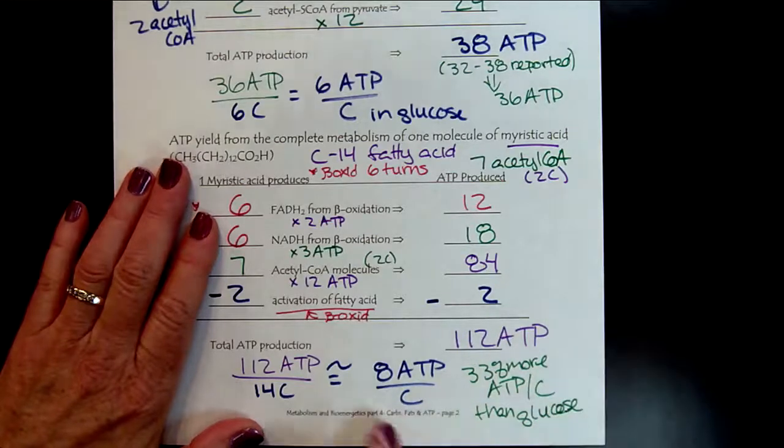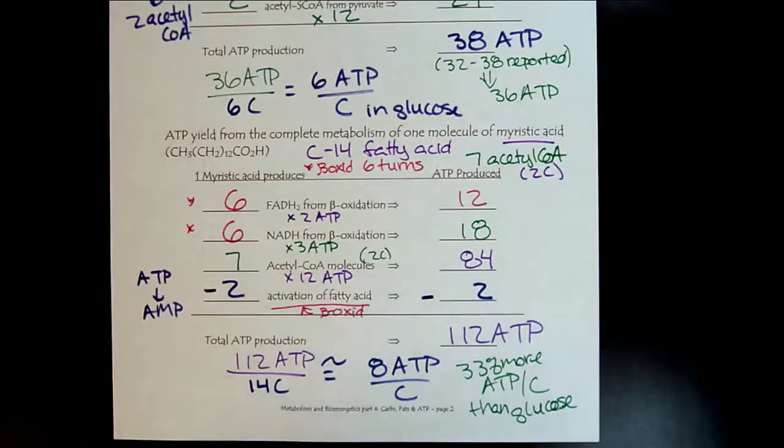So back at the very, for exam one, we were studying the calories from our food. And we noticed that we get, there are more calories per grams of fat than there are carbohydrates. And here is the underlying biochemical reason why.